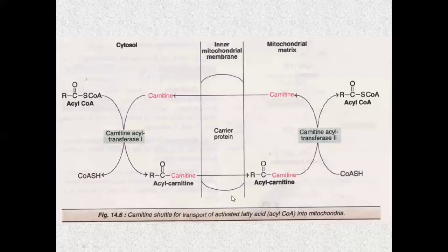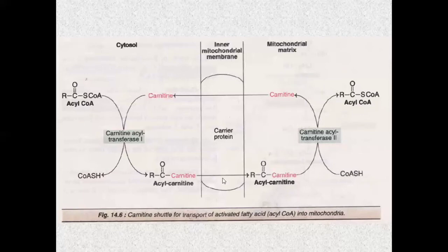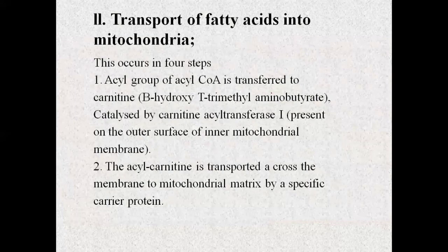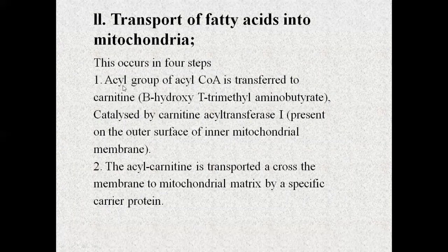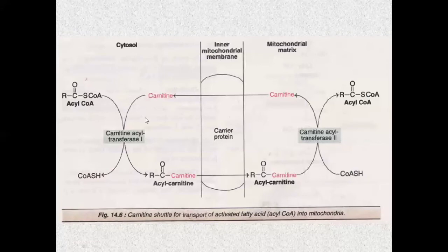So this whole carnitine shuttle is used for the transport of activated fatty acids. Now the activated fatty acid is ready for oxidation inside the mitochondria. The whole process is divided into four steps. Step 1: the acyl group is transferred from acyl-CoA to carnitine, forming acyl-carnitine — catalyzed by Carnitine Acyl Transferase 1 (CAT1). Step 2: acyl-carnitine is transported across the inner membrane into the mitochondrial matrix by a specific carrier protein.